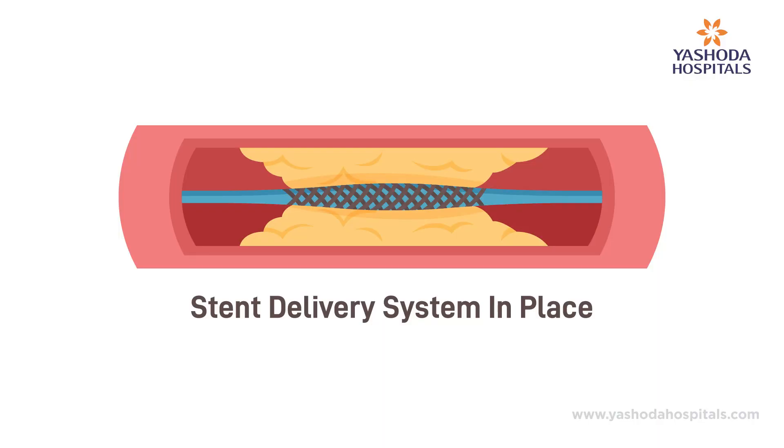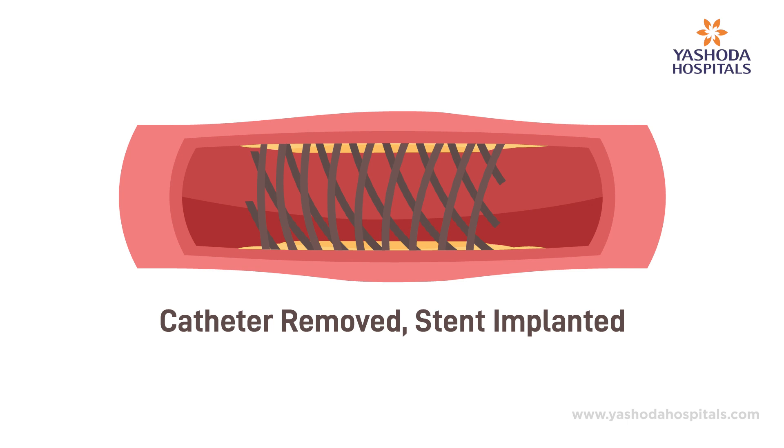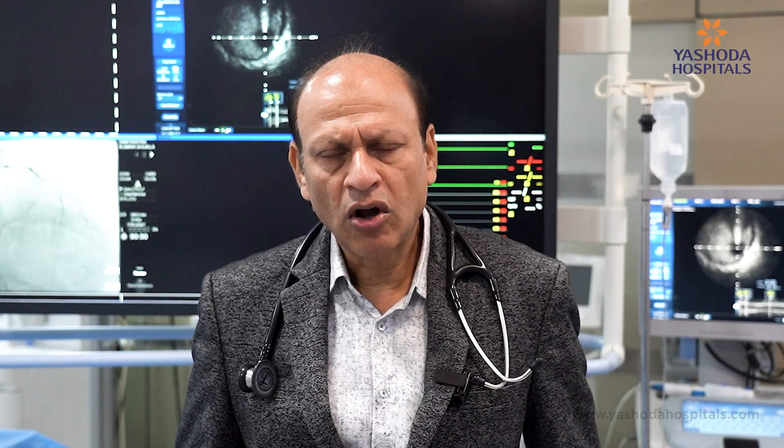This helps us to guide the treatment strategies — how to plan for a coronary intervention: should you just do a balloon angioplasty, should you put a stent, or do we need something to modify the calcium in the blood vessels so that we get a better stent implantation. Not only that, it is also important to tell us about the right size of the stent and the right length of the stent.